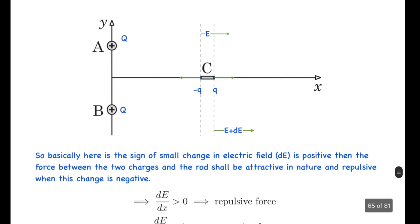So basically here is the sign of small change in electric field dE. What I'm saying is that let's say there's an electric field E at the position of the charge minus q, and there's an electric field of E plus dE at the place where the charge of plus q is induced. So the forces on the two charges will be (E + dE) times q in this direction on the charge plus q, and minus q times E in this direction. So the net force will be dE times q on the system.